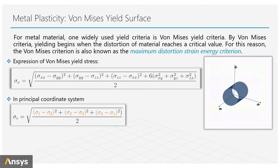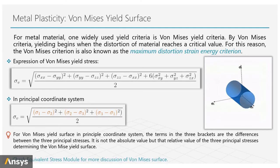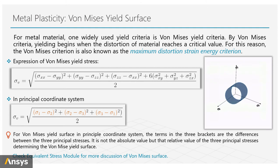Given the stress state of a material, we can calculate Von Mises stress from the stress tensor components, or it can be found by principal stress components. Here, the terms in the three brackets are the differences between the three principal stresses. So it's not the absolute value but the relative value of the three principal stresses that determine the Von Mises stress value. And that's why we say Von Mises criterion tracks distortion of a material and is mostly suitable for ductile materials.